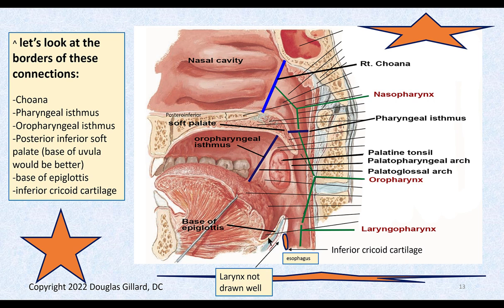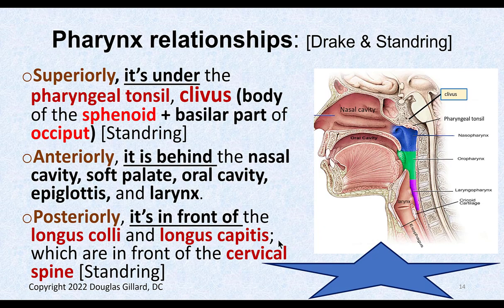At the base of the epiglottis, the oropharynx ends and the laryngopharynx starts. The laryngopharynx ends at the base of the cricoid cartilage. It's confusing — you have to listen back and get all this in your memory. It's not a great picture; the larynx should be much bigger.